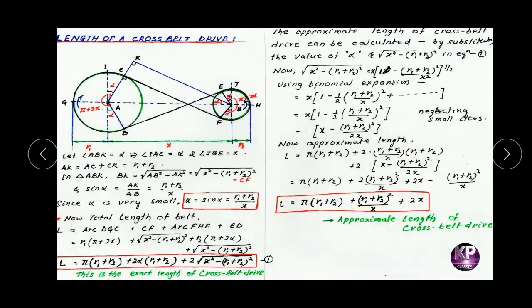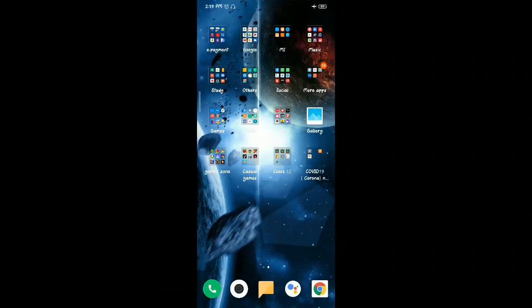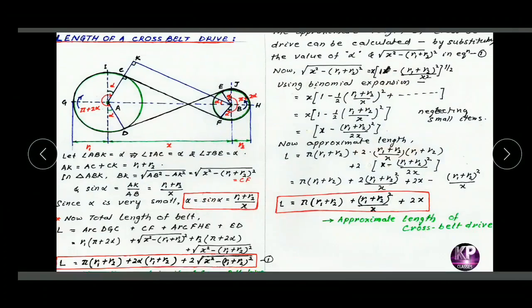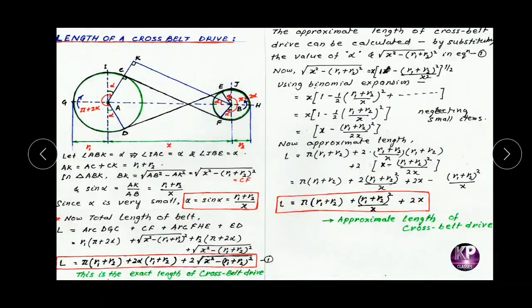The approximate length of the cross belt drive can be calculated by substituting the value of alpha and expanding the square root term. The square root of X squared minus (R1 plus R2) squared can be expanded by binomial expansion, giving X minus (R1 plus R2) squared over 2X.